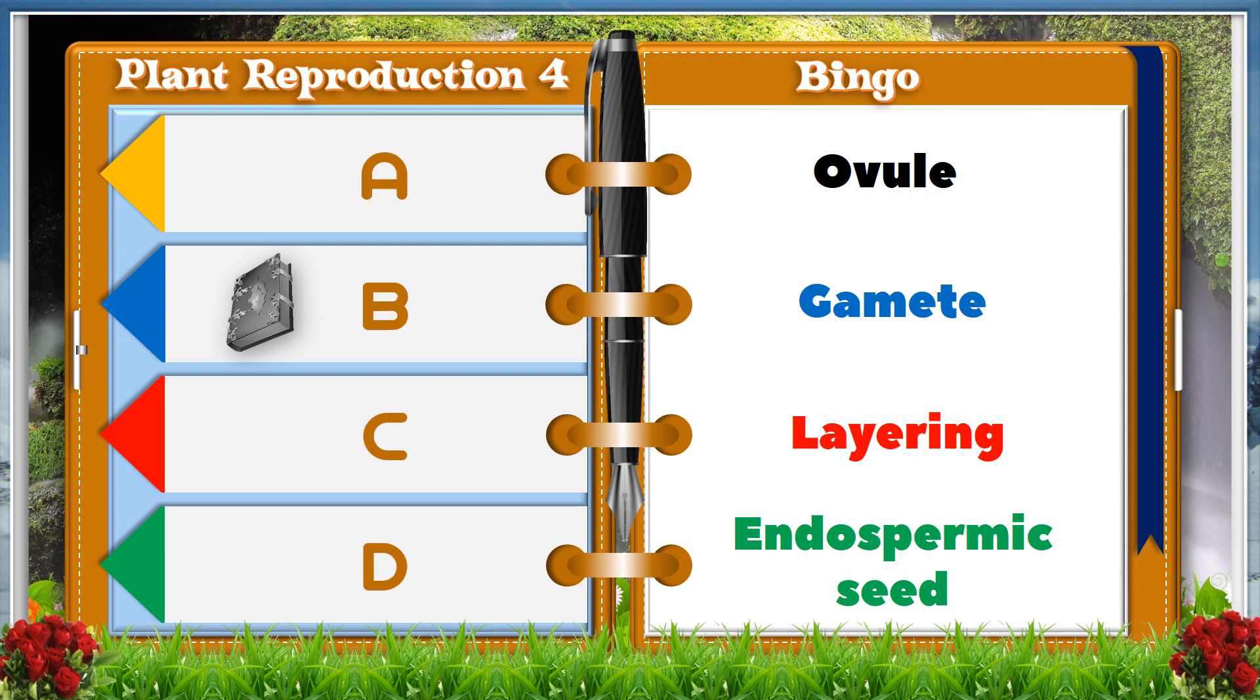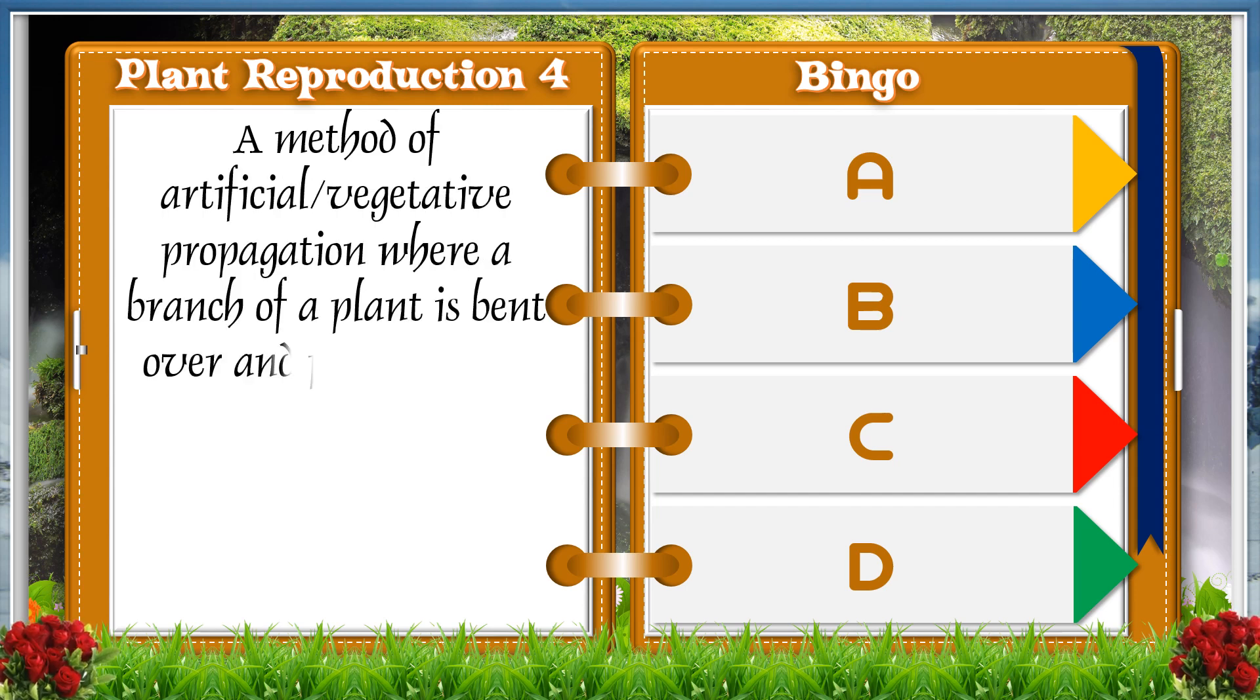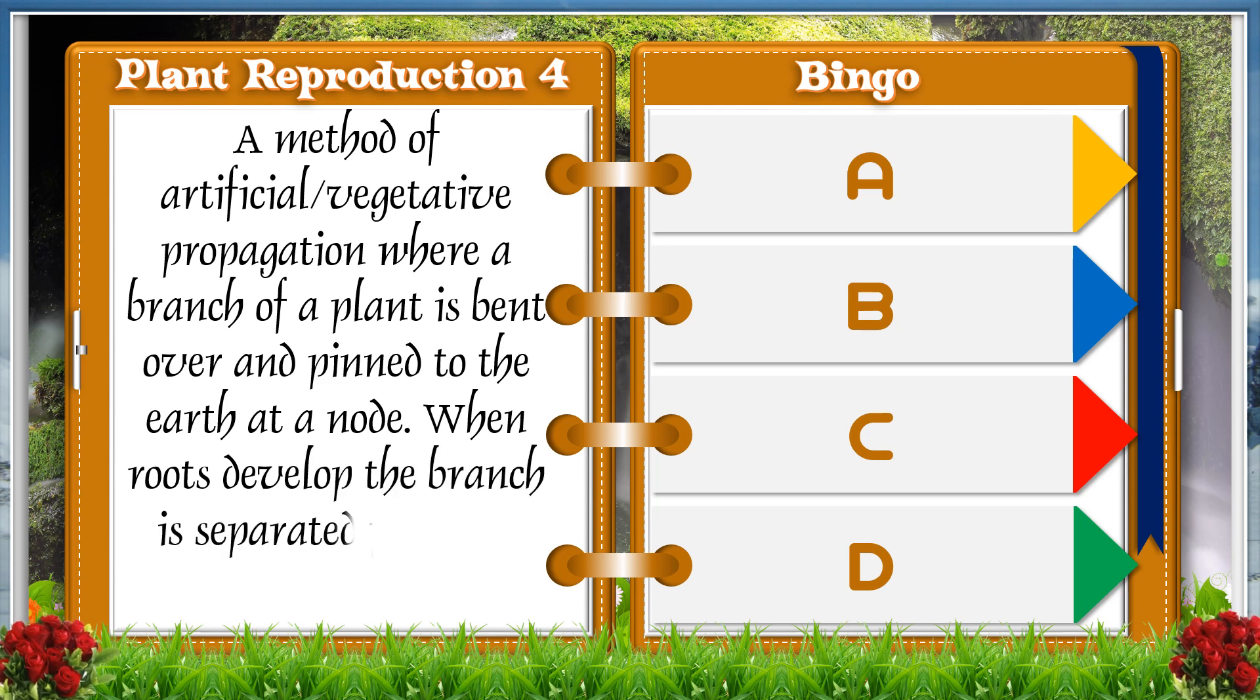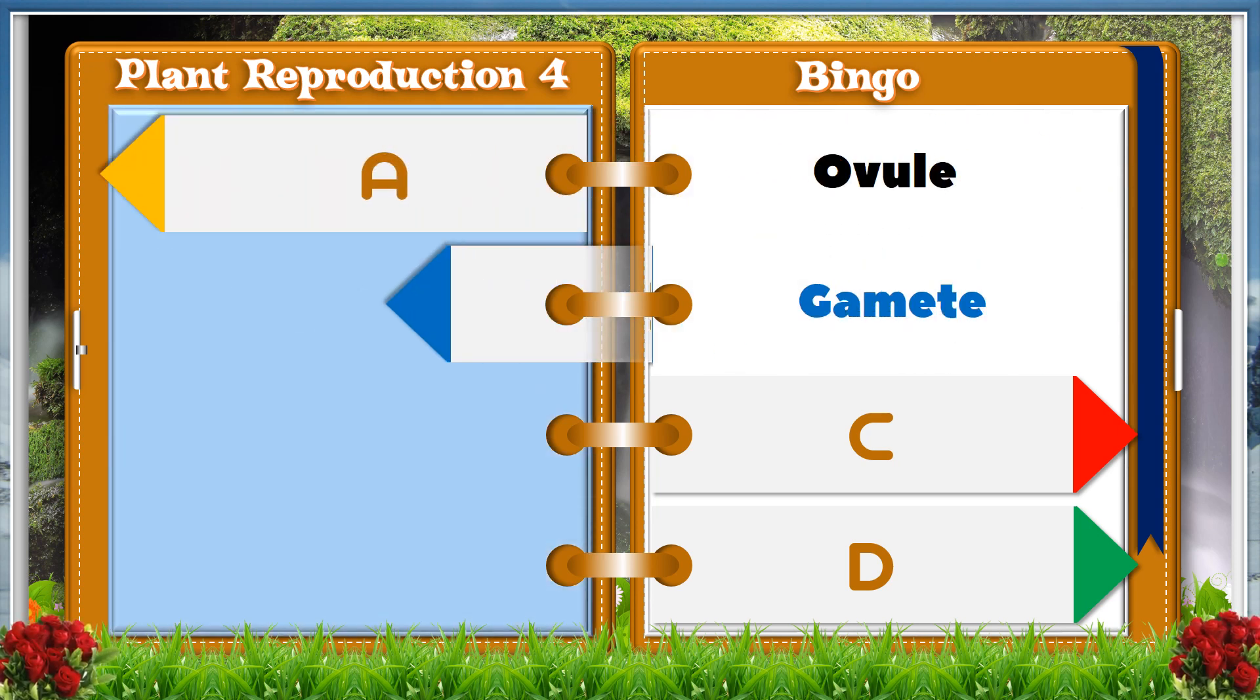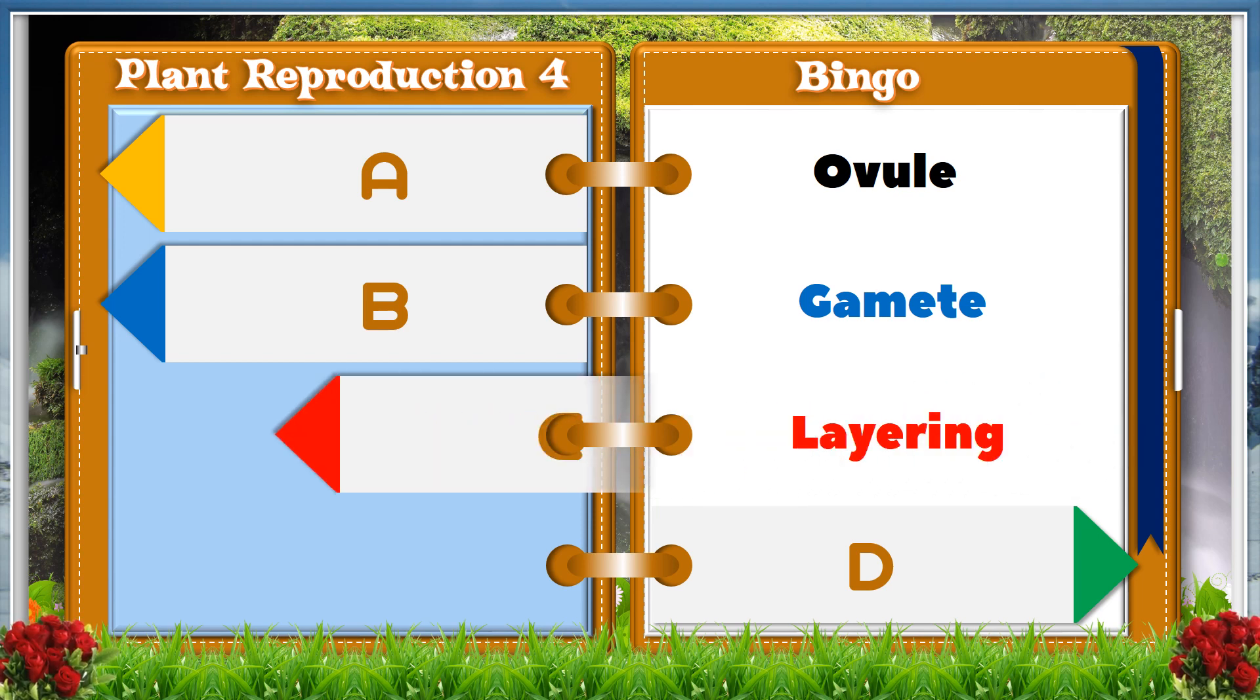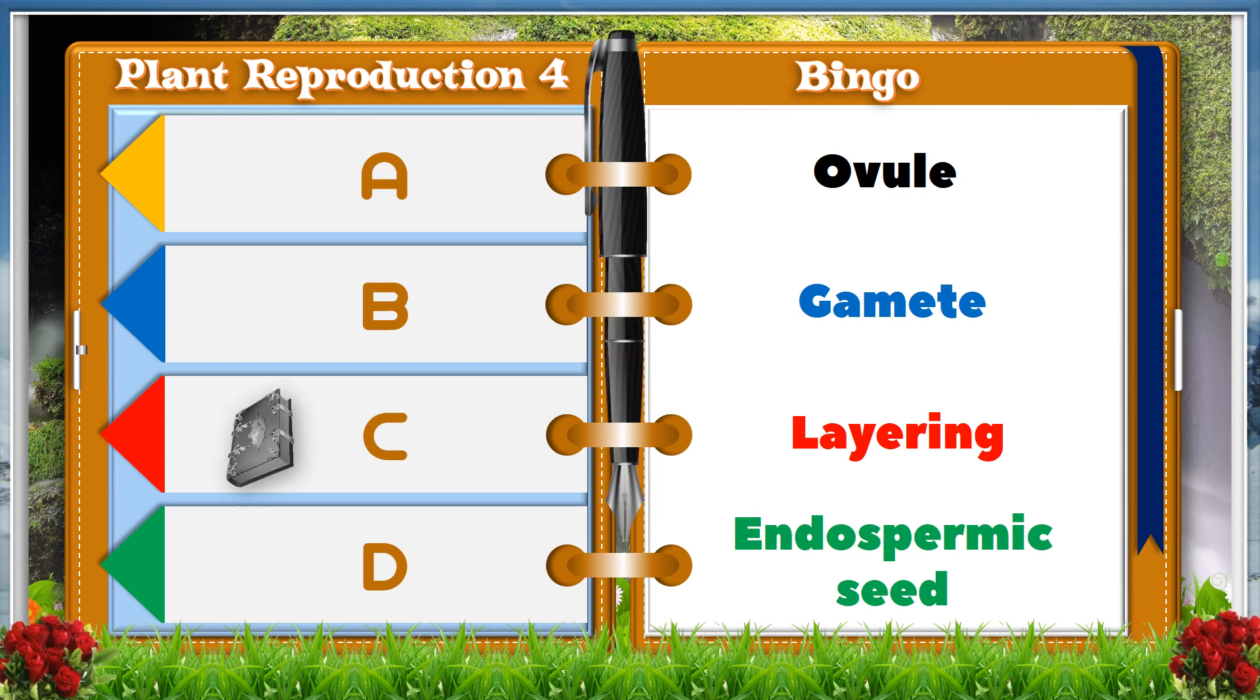A method of artificial vegetative propagation where a branch of a plant is bent over and pinned to the earth at a node. When roots develop, the branch is separated from the parent plant. A. Ovule. B. Gamete. C. Layering. D. Endospermic seed. And the answer is C, Layering.